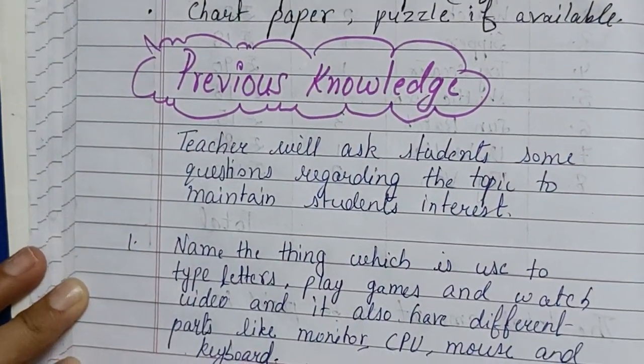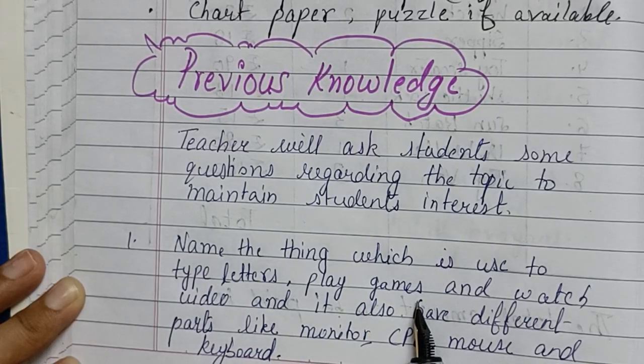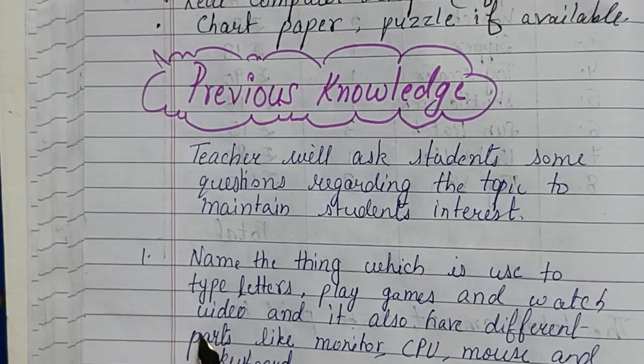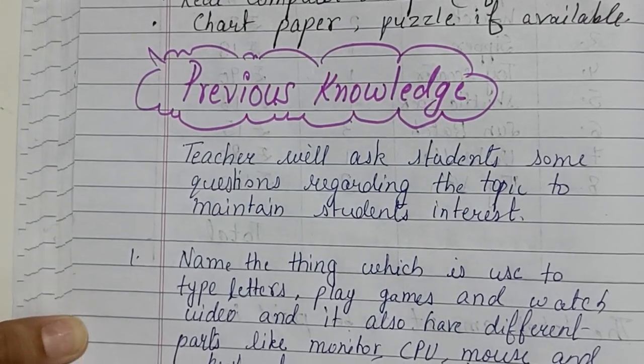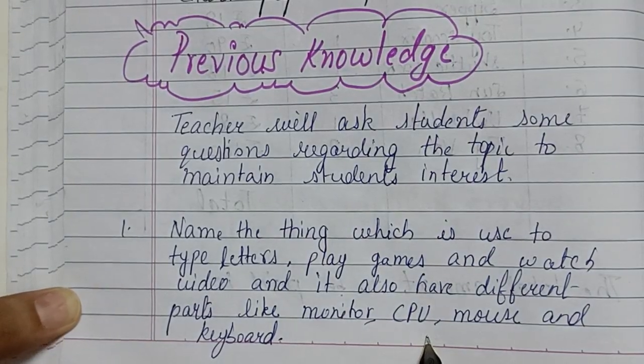First, name the thing which is used to type letters, play games, and watch videos and it also has different parts like monitors, CPU, mouse, and keyboard. Students will answer: yes, computer.